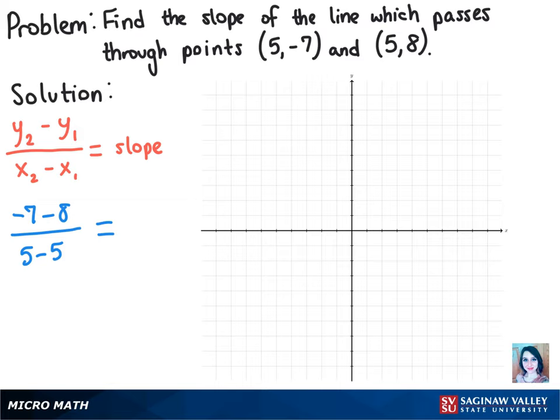Which is going to equal negative 15 over 0 when we subtract across. But we can't divide by 0, so this solution for the slope here is undefined.